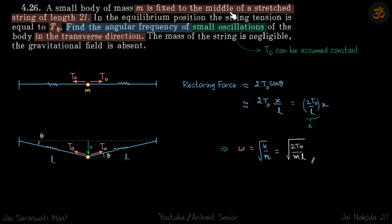A mass m is fixed to the middle of a stretched string of length 2l. At the center we have mass m. The tension is T₀ on both sides. Find the angular frequency of small oscillations in the transverse direction when the mass is shifted in the transverse direction.